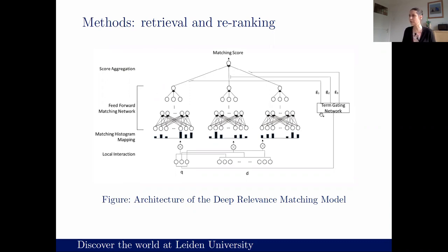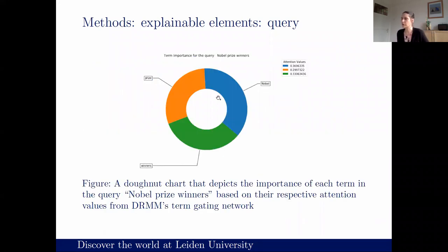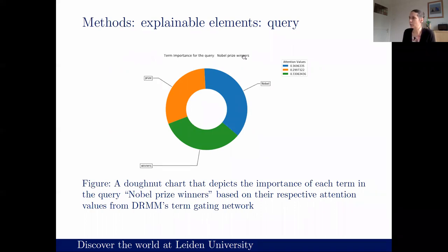What is important here is that in the last layer there is a term gating network, which stores the importance of each query term for the current ranking. We have a query consisting of multiple terms and they are weighted relative to each other based on how important they were for finding the relevant documents. So we can extract the relevance score of each query term from the model.